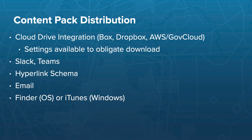Content packs are shared very easily among users. You can set up a cloud drive integration supporting Box, Dropbox, or AWS GovCloud, configured through plan.foreflight.com. Group accounts can set settings to force users to download everything or allow them to pick and choose to manage device storage. You can also share content packs over Slack or Teams using a special hyperlink schema, over email, or through Finder or iTunes depending on whether you have a Mac or Windows device.